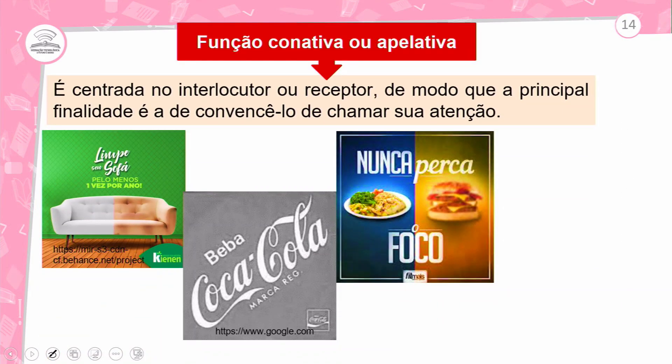A função conativa, também chamada apelativa — se não encontrar 'conativa' no livro, procure 'apelativa'. Por que apelativa? Porque vai estar direcionada ao receptor — você. Ela é centrada no interlocutor ou receptor, e a principal finalidade é convencê-lo ou chamar a sua atenção. Exemplo: 'Limpe seu sofá pelo menos uma vez por ano' — o verbo no imperativo é uma das marcas da função apelativa/conativa.